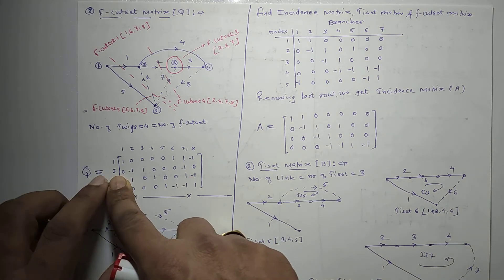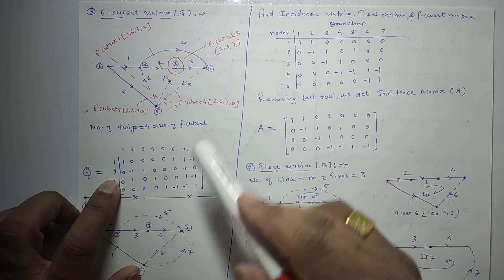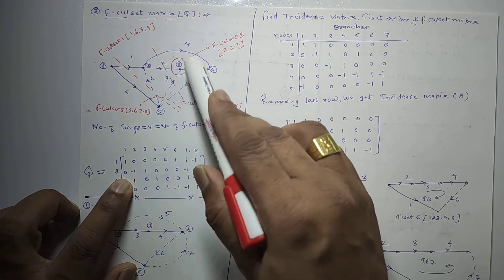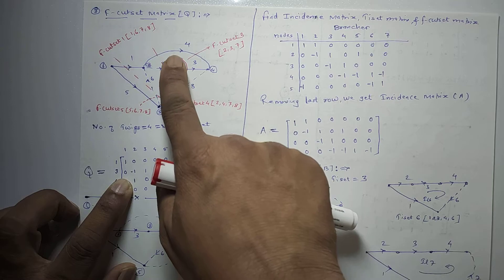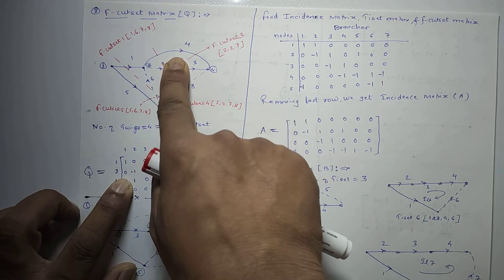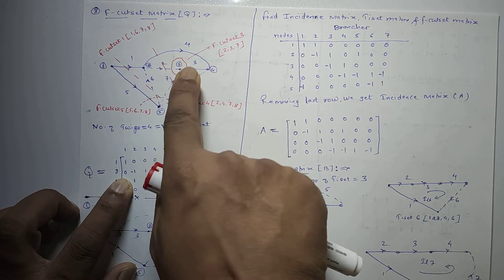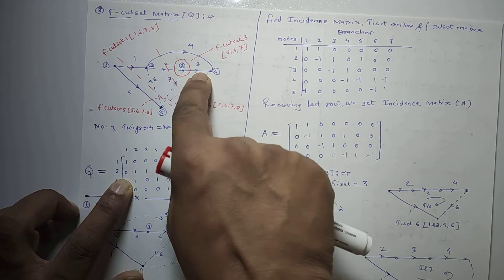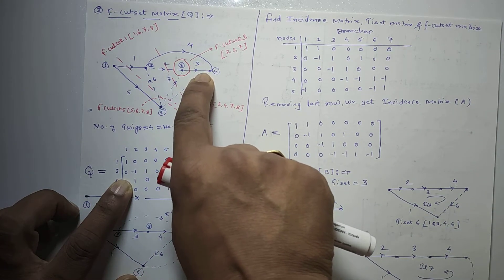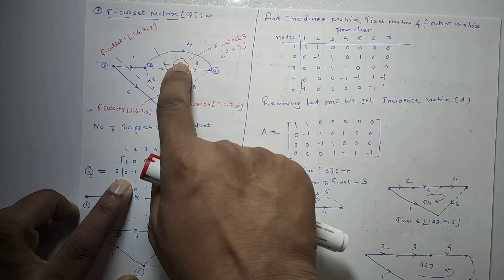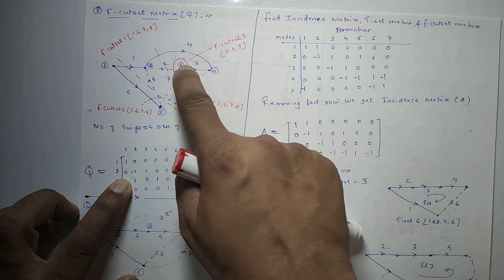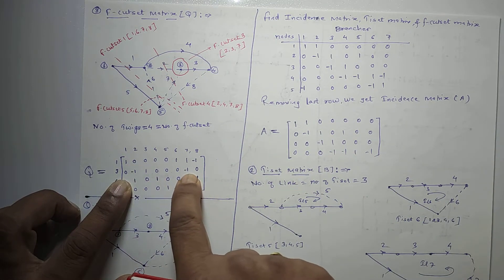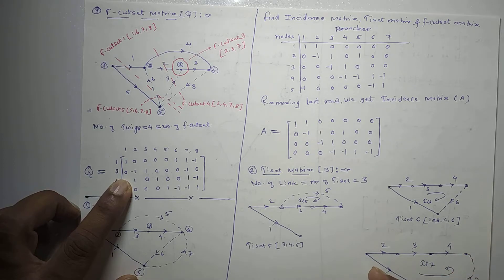For f cut set 3, formed by branches 2, 3, and 7: twig 3 is leaving from the isolated node part — so it is positive. Branches 2 and 7 are entering towards that part — so they are negative. Therefore branches 2 and 7 are negative, and branch 3 is positive.